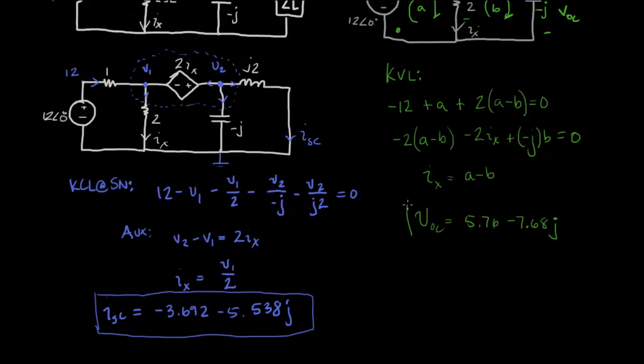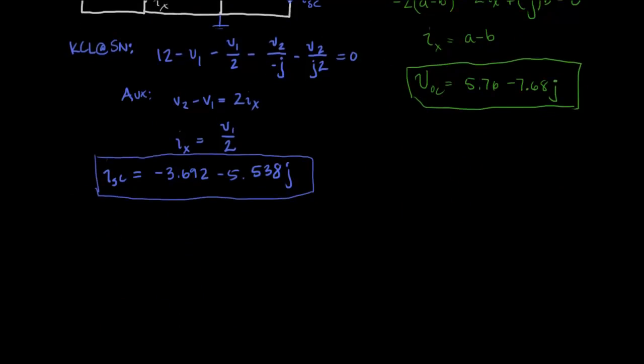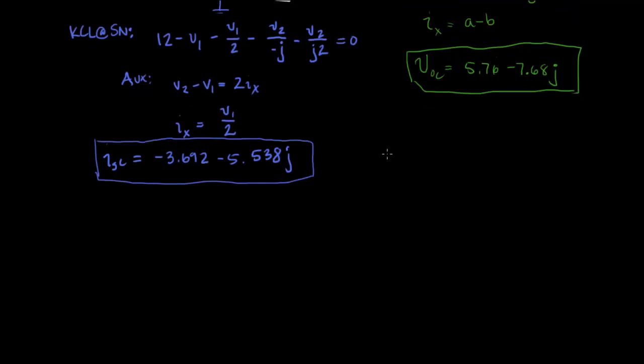And with this, we're now ready to construct our Thevenin equivalent circuit. Because instead of having a Thevenin resistance, we're going to have a Thevenin impedance. And Z Thevenin will simply equal VOC over ISC just like in our previous examples of Thevenin equivalent circuits. So I'm going to set up this equation. And I'll just do it right over in Mathematica.